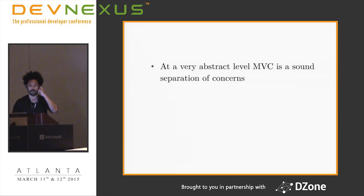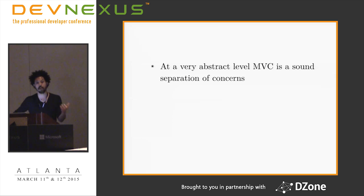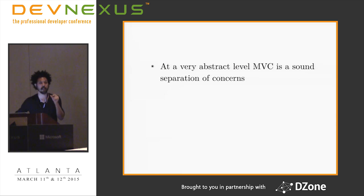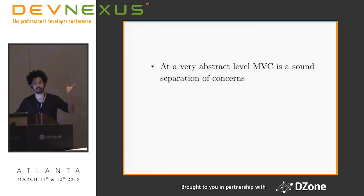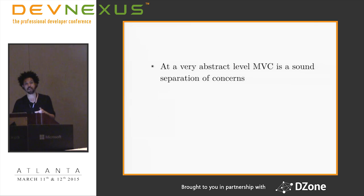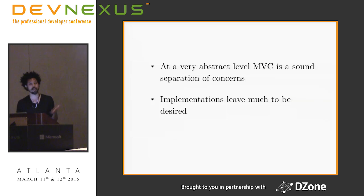MVC is a relatively sound separation of concerns. You have a model representing what the user cares about, a view presenting that data in a non-gobbledygook way, and a controller keeping them coordinated. Most of our time is wrangling that controller, and I would argue that problem is fundamentally one of managing state. The user has a visual representation of state and wants to change it — that needs to stay in sync with the underlying domain model. Even though MVC as a concept makes a lot of sense, implementations leave a lot to be desired.